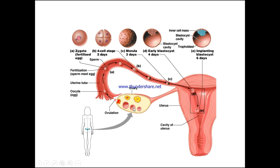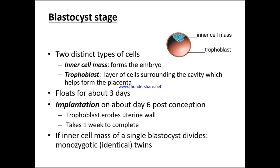Let's go through and look at this again: the early zygote, the four-cell stage, the morula, the early blastocyst, and then the implanting blastocyst upon the wall. At the blastocyst stage, we have two distinct types of cells: the inner cell mass, which forms the embryo, and the trophoblast — the layer of cells surrounding the cavity — which is going to form the very important placenta.